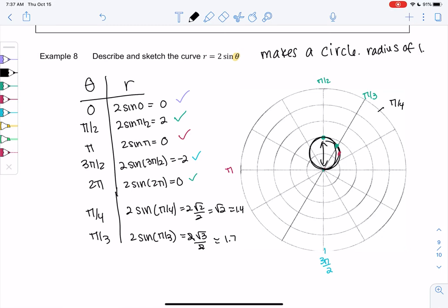And where's the center? The center would be right here at (0,1). Radius of 1 and center of (0,1). So it looks like the center and the radius are basically half of the 2 right there.